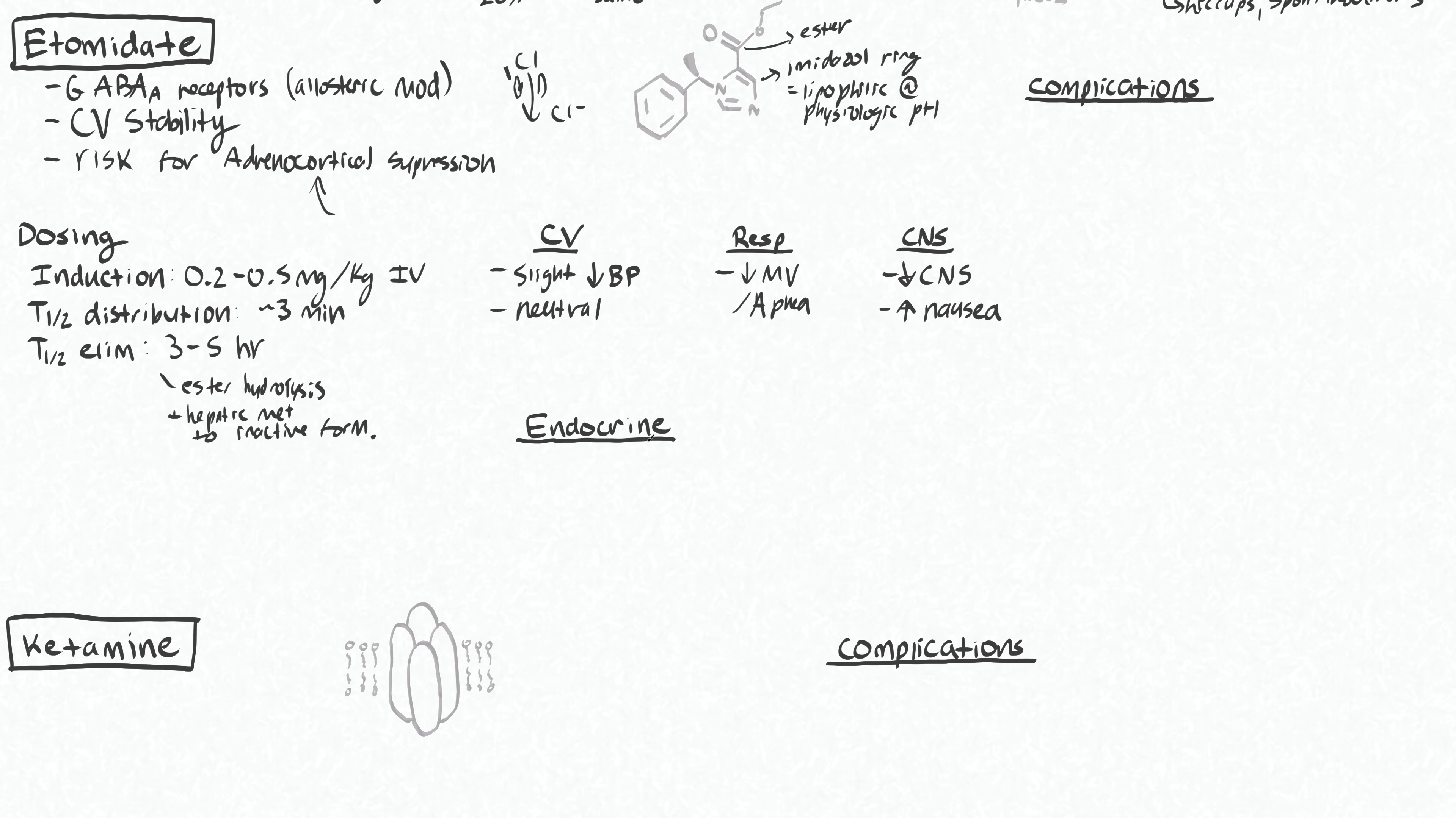We should talk about the endocrine effects of etomidate because these are unique and important. There is this risk of adrenocortical suppression. Up to 72 hours after a single bolus, you can have suppression of the enzyme which is required to convert precursors into cortisol and aldosterone. It's this enzyme called 11-beta-hydroxylase that is reversibly inhibited by etomidate. So potentially, with a bolus of etomidate, you can cause this.